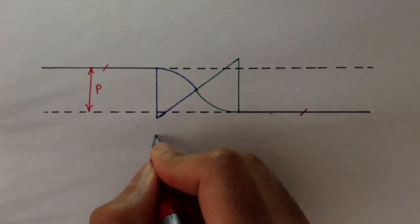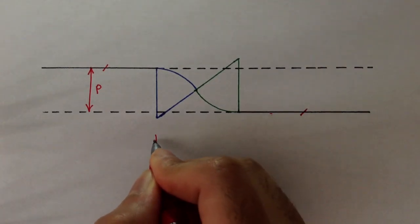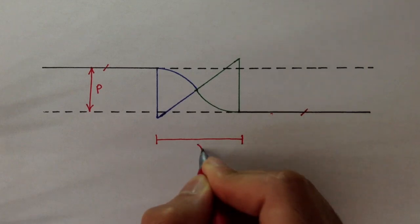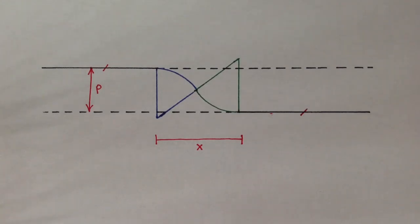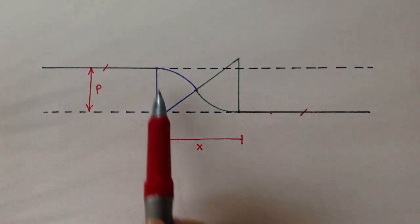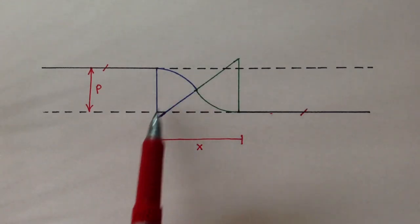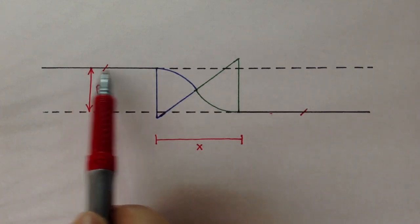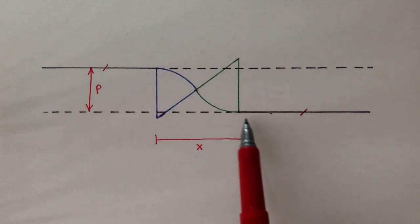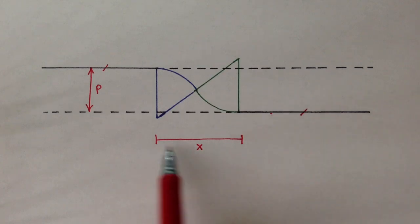I also want to figure out this distance called X, or the transition length. The transition length is basically the distance it takes for a curve to transition from a straight line on road 1 to road 2.